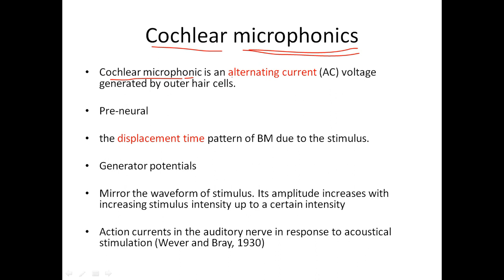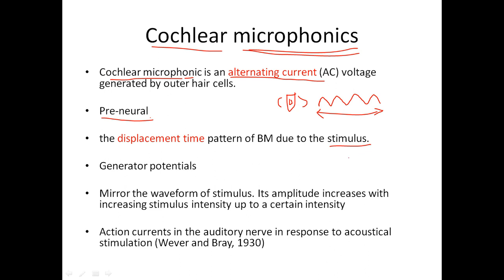Cochlear microphonic is an alternating current — alternating voltage generated by outer cells. The outer cells have the capacity to elongate and shorten, that is the bulging — they have the ability to move. Once the movement happens, the potential is generated, so it is alternating — it will have rarefaction and condensation phases like a sinusoid. It is a pre-neural response, not at the level of nerve. It mimics the displacement-time pattern of the basilar membrane due to the stimulus — that is why it is called a stimulus-related bioelectric potential.